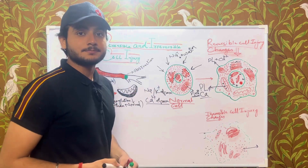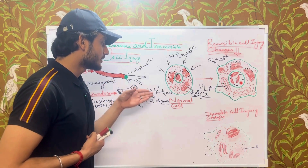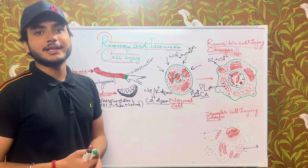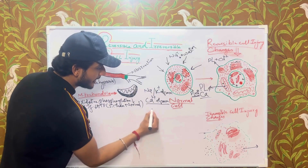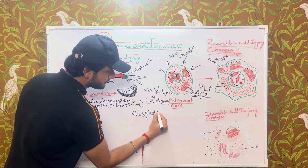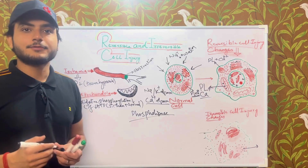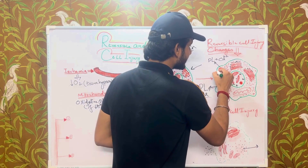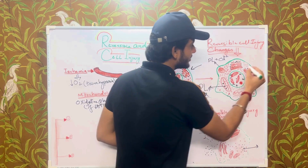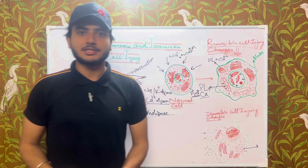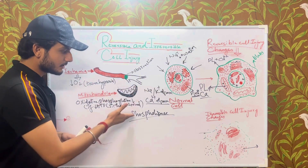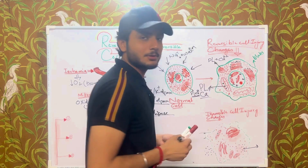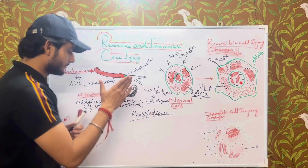Calcium ATPase is also impaired, so calcium starts coming into the cell. Due to this calcium influx, calcium activates an enzyme known as phospholipase. This phospholipase starts damaging the cell membrane, causing loss of membrane integrity and the formation of blebs. Also, this phospholipase damages the cell membrane, leading to the formation of myelin figures, which are made up of phospholipid and calcium.